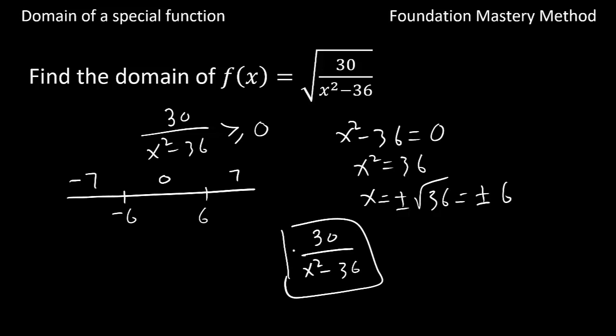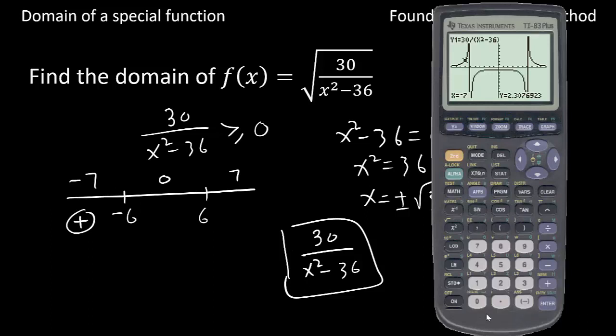So we'll do this one in the calculator. Now we check at 0. So we get negative, and then finally when we check for 7, that gives me positive also.